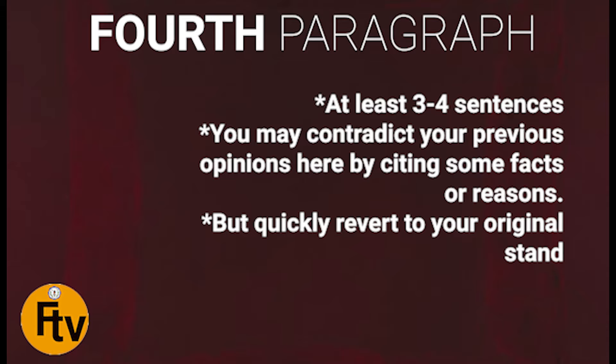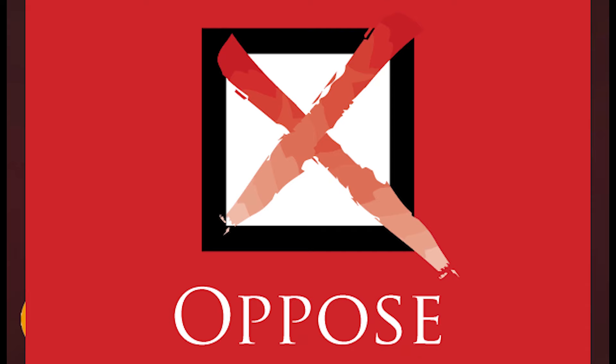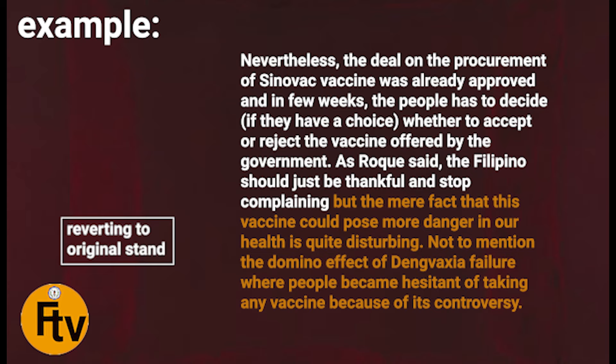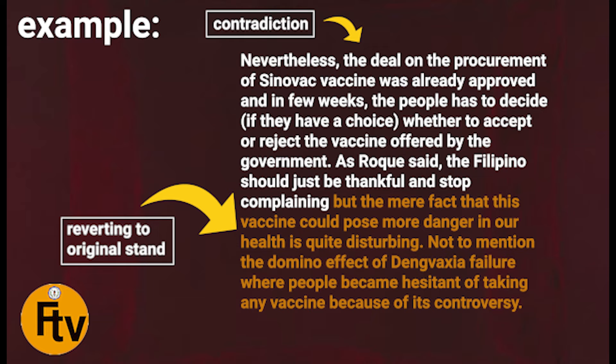Let us move on to the fourth paragraph — at least three to four sentences pa rin. But in this paragraph, you may contradict your previous opinions here by citing some facts or reasons. Ibig sabihin, pwede mo nang kontrahin, pwede mo nang kalabanin yung sarili mong opinion from the first three paragraphs. But make sure you are going to quickly revert to your original stand — babalik ka sa stand bago matapos itong fourth paragraph. For example, ang nakasulat sa first and second sentence is actually your contradiction, kung saan ang stand mo doon ay you are disagreeing with the issue. Then bago matapos ang iyong paragraph dito, ay kailangang bumalik ka — you have to revert to your original stand kasi ihahanda mo ulit ang sarili mo para sa susunod na paragraph because you need more or stronger evidences.